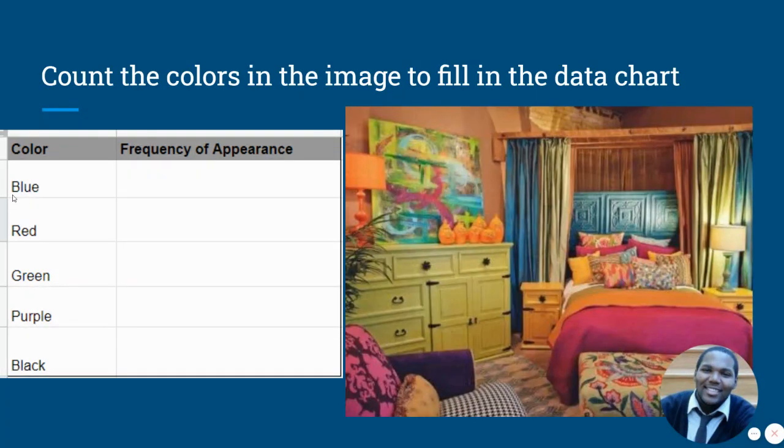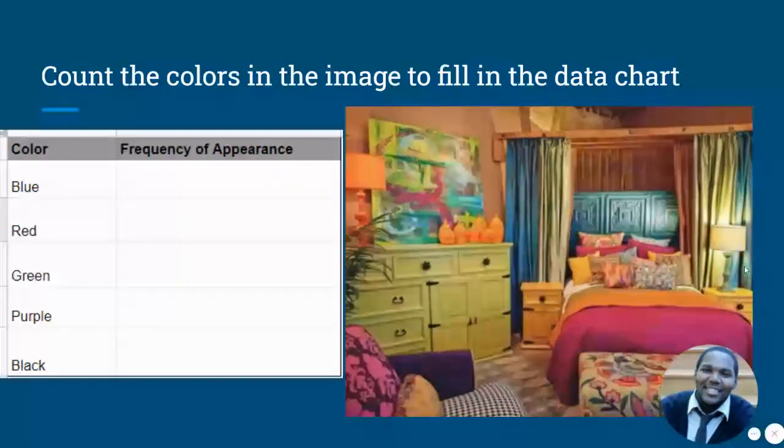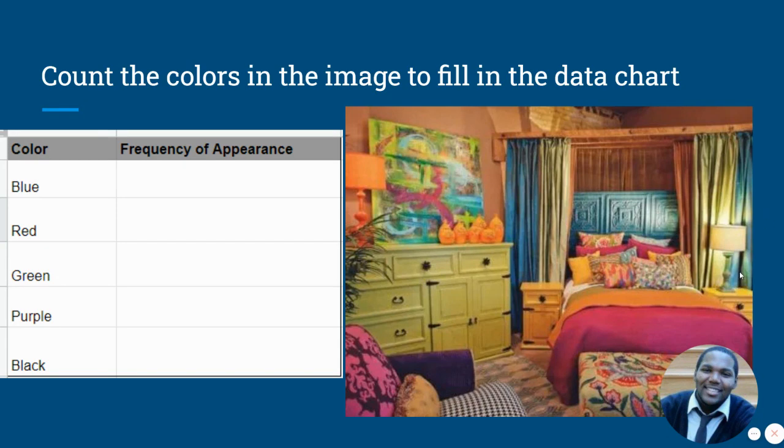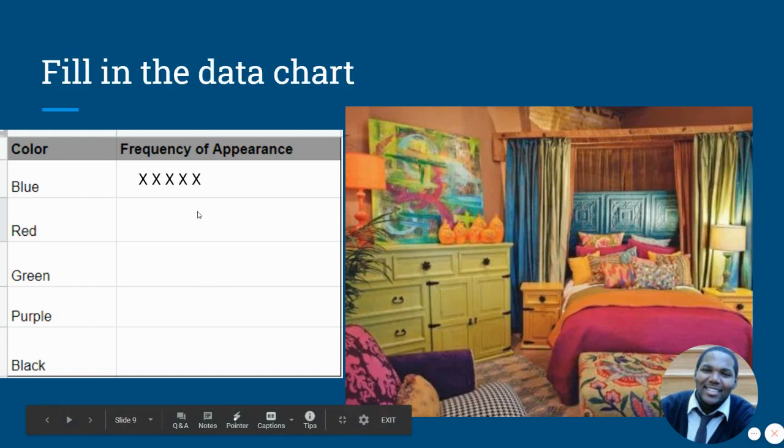The color that we're looking for first is what? That's right, blue. How many different items here have the color blue on it? So we're just counting the items. I see some blue in this painting right here. So that's one. This curtain is blue, two. This backboard is blue, that's three. This curtain is blue, that's four. There's a pillow right here, it looks like it has some blue in it, that's five. I don't see anything else with blue in it. So let's go with five.